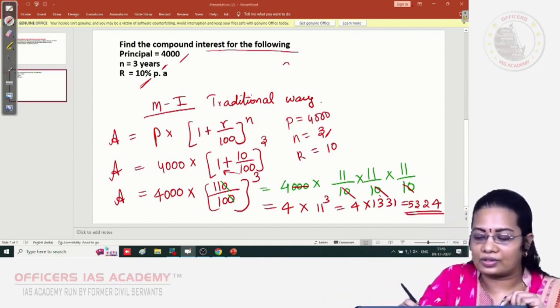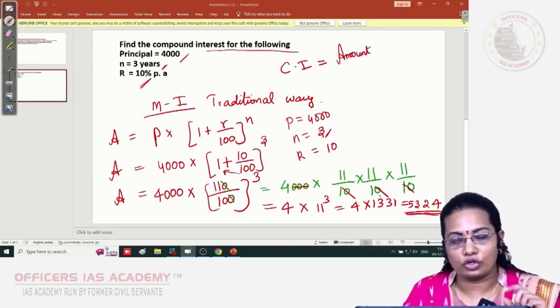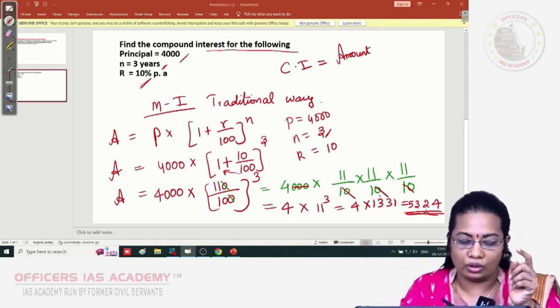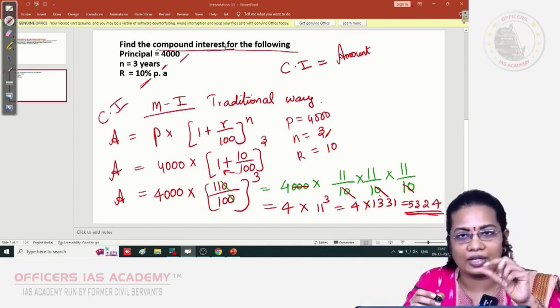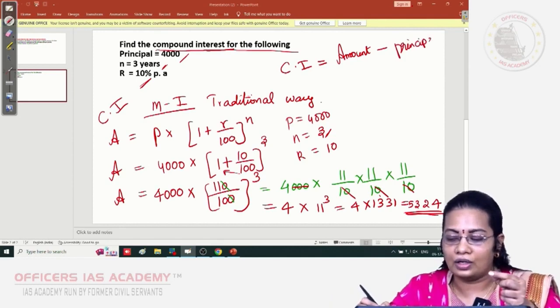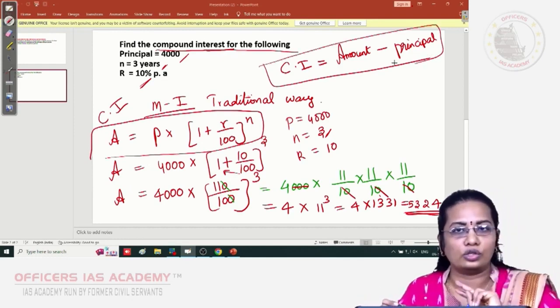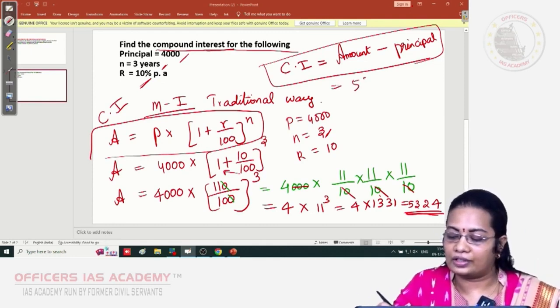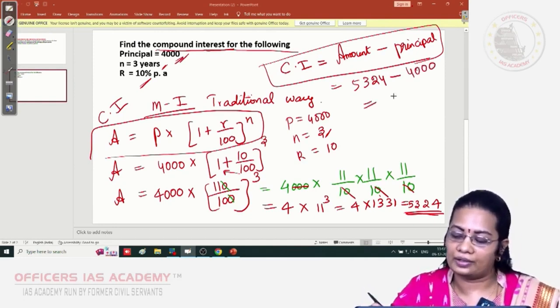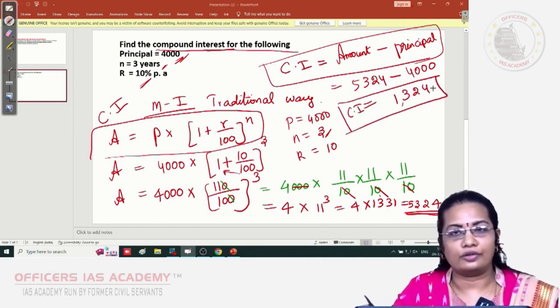We got 5,324, but we want only the compound interest. You got 5,324 as total amount, which is the amount you invested along with the interest. But we only want the compound interest. Compound interest = Amount - Principal. This is the standard formula. CI = 5,324 - 4,000 = 1,324.